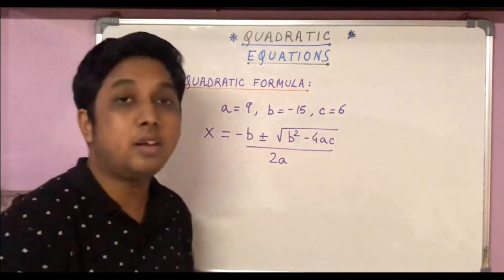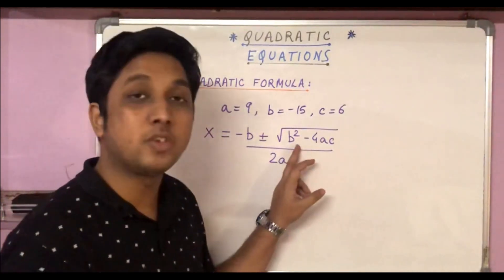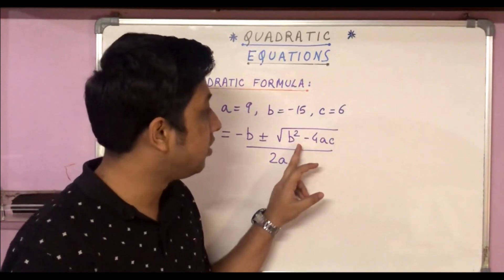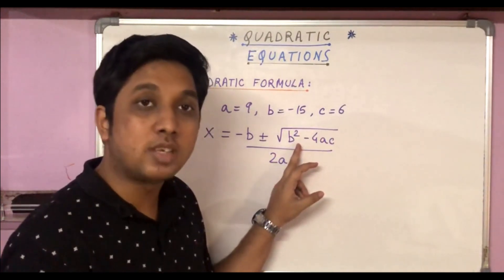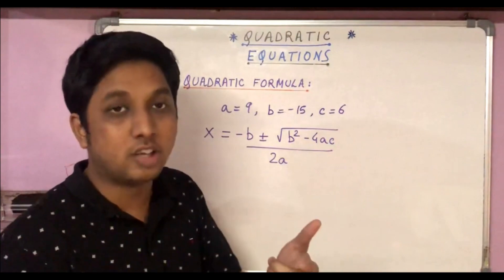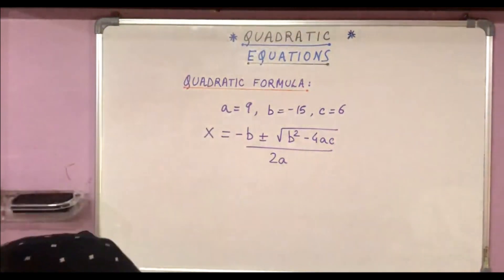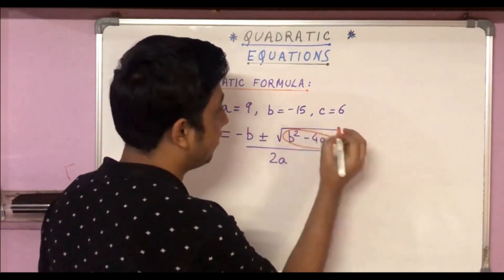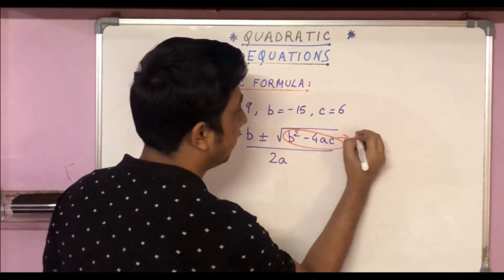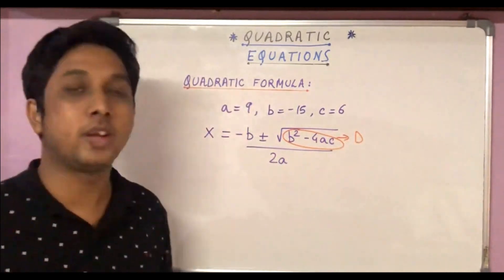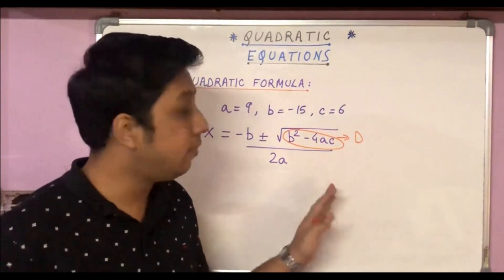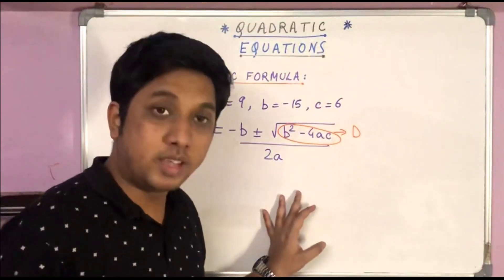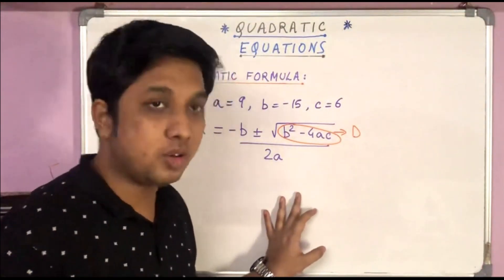Now you would remember in the earlier video in which I had introduced quadratic equations, we had labeled b² - 4ac as D, the discriminant of the equation. So this b² - 4ac is D, that is the discriminant of the equation. It holds a special importance which we will discuss in future videos. So if you haven't watched that video, do watch it. The link is given in the description box.